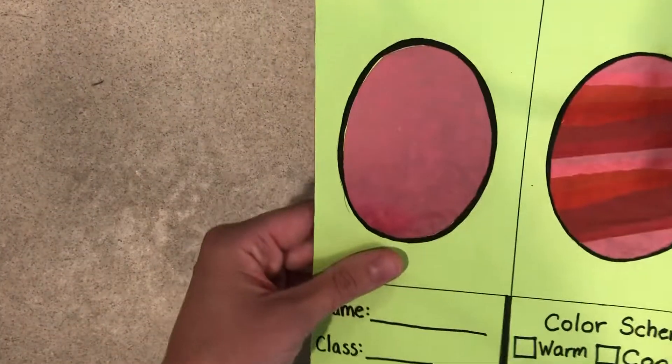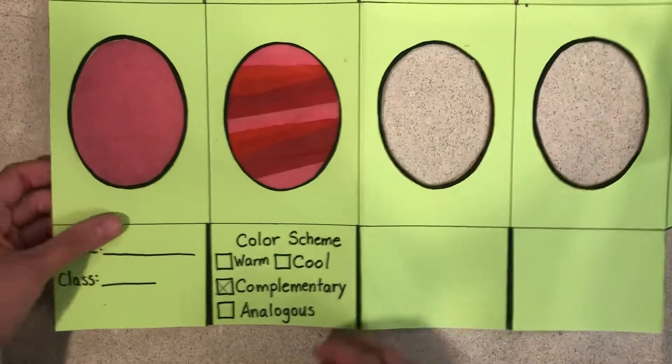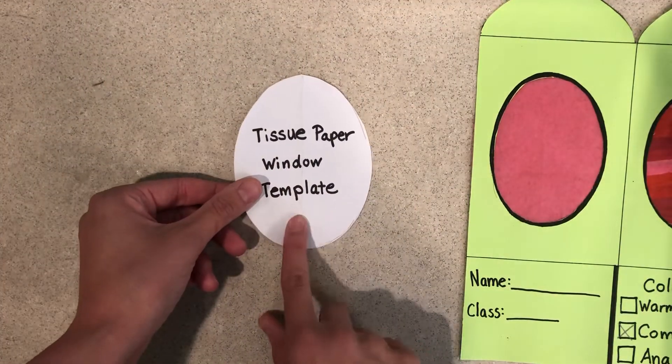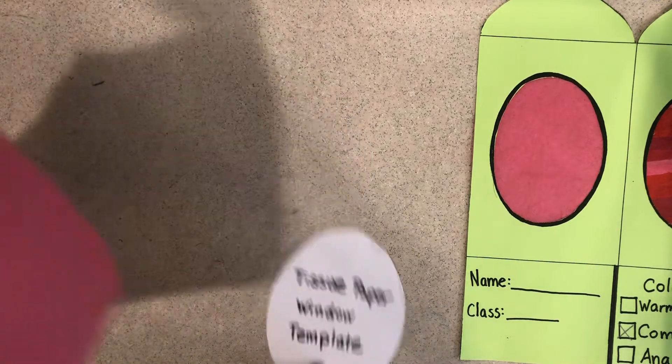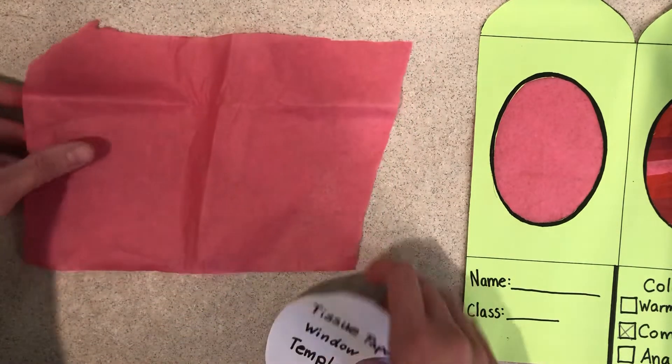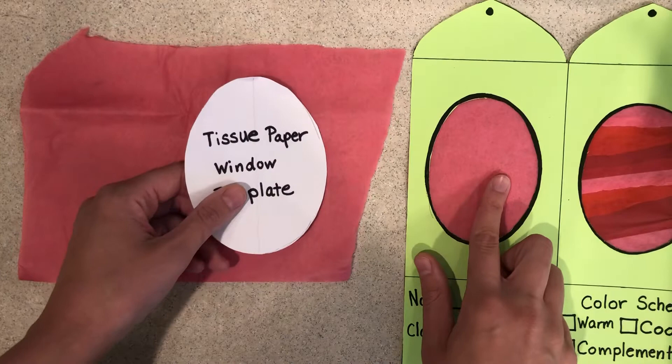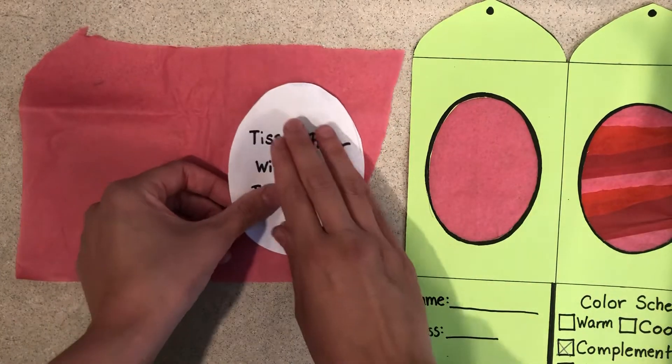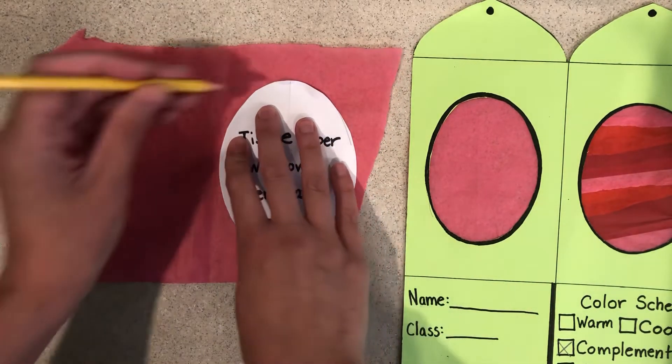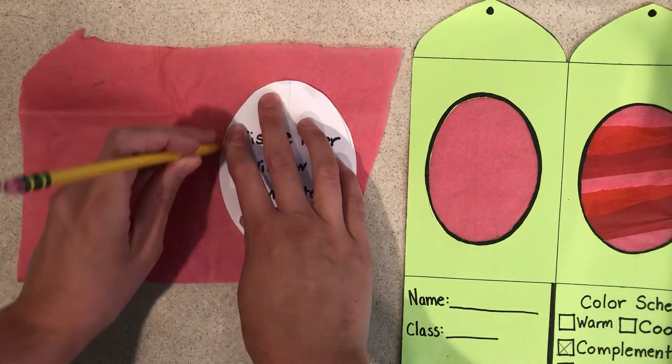You can choose whether you'd like a solid color window and if you want to do that, you're going to grab a tissue paper window template that I have. If you want to do different color windows, like one pink, one red, one pink, one red, you can put it on here and trace it with a pencil.